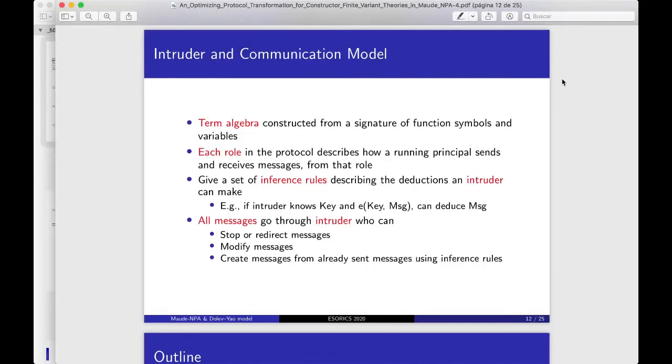The intruder and communication model of Maude-NPA. Maude-NPA has a term algebra constructed from a signature of function symbols and variables. Each role in the protocol describes how a running principal sends and receives messages from that role. Given a set of inference rules describing the deduction an intruder can make. One example is, if the intruder knows the key, in the encryption A with the argument key and message can deduce this message. Maude-NPA has an active intruder. That means, all messages go through intruder, giving her the ability to stop and redirect the message, manipulate this message, and create messages from already sent messages using inference rules.